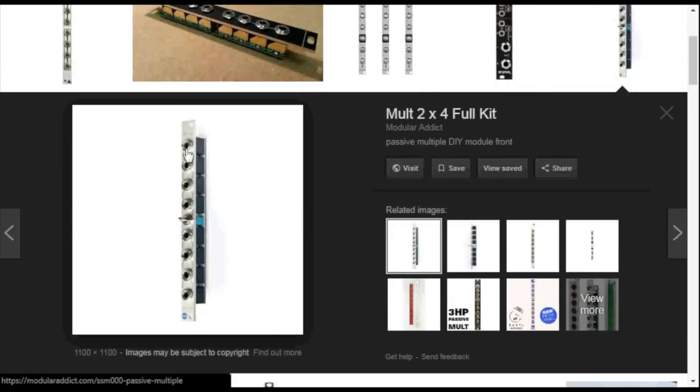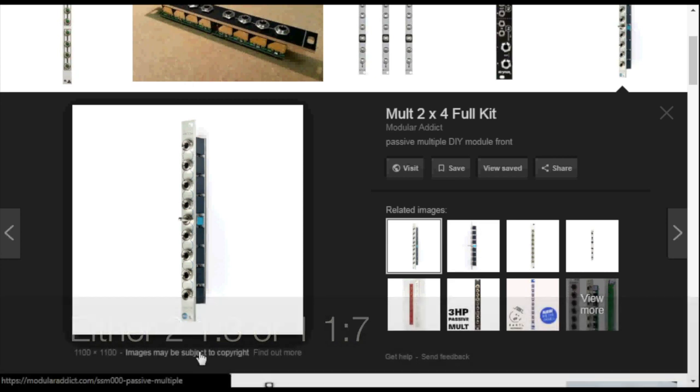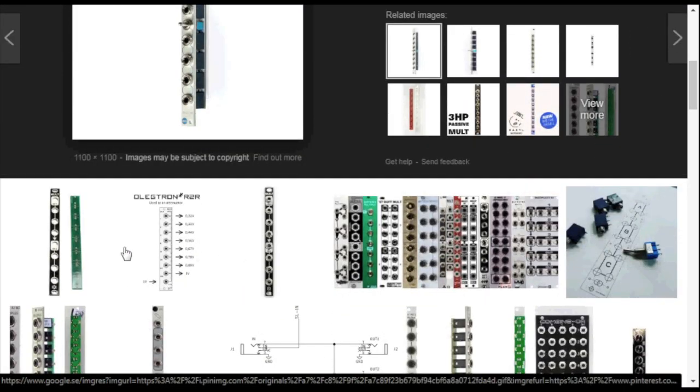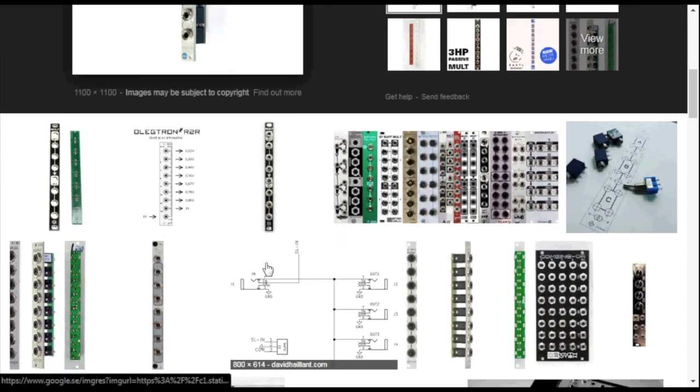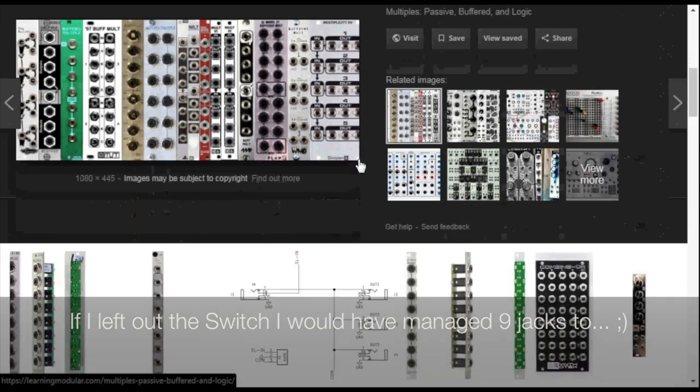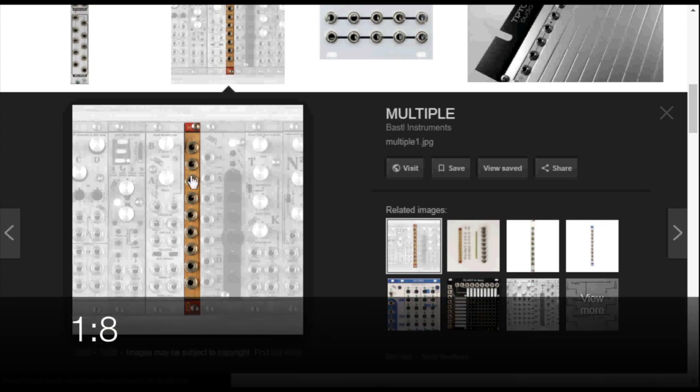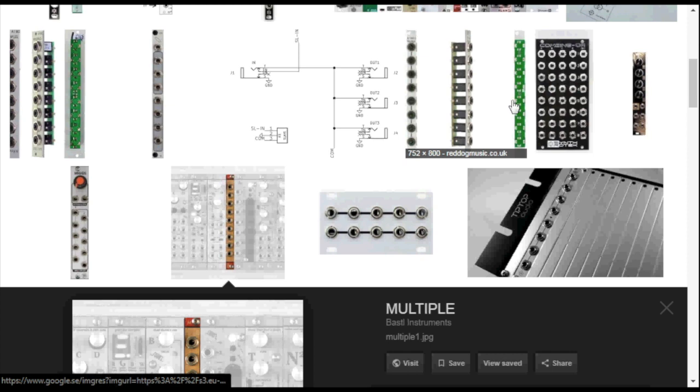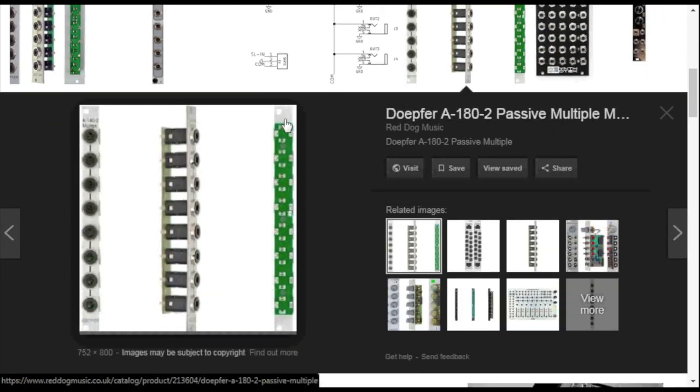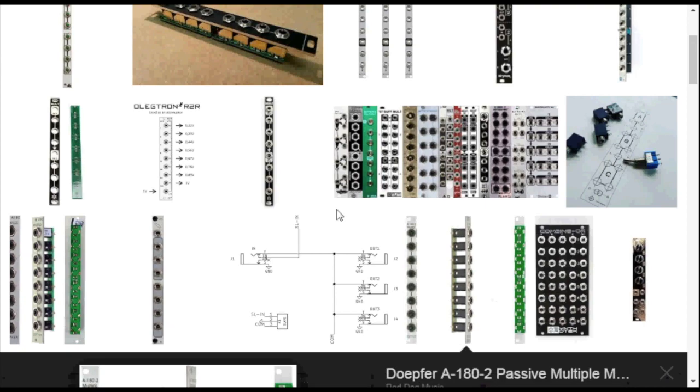Here is actually something similar to what I'm going to make with a switch in the middle so we can have either two one-to-three sections or we can have one one-to-seven. Also there are some that actually managed to get nine jacks in instead. Here the Bastl one has nine jacks so one to eight, but they're all the same behind, no circuitry at all. So let's solder one of these together.